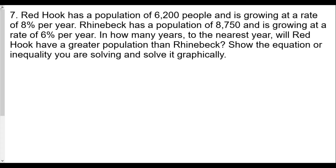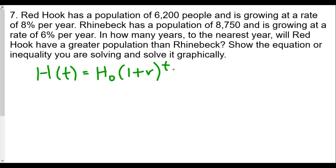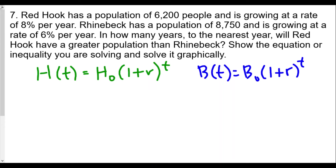To the nearest year, in how many years will Red Hook have a greater population than Rhinebeck? We'll call Red Hook h(t) and write h(t) = h(0) × (1 + r)^t, where h(0) is the initial population. For Red Hook, h(0) = 6,200.